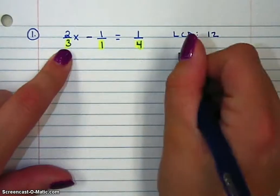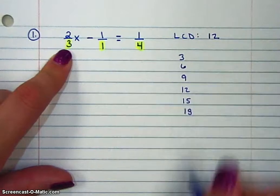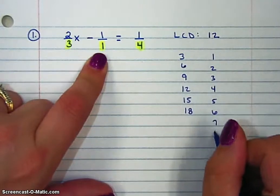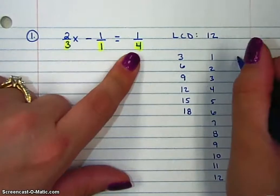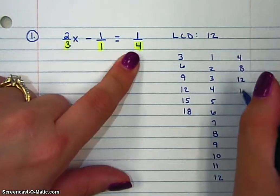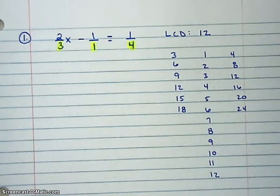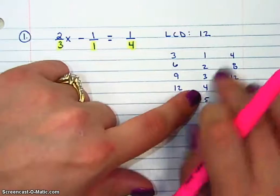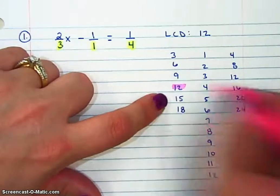If we start counting by 3's: 3, 6, 9, 12, 15, 18, and so on. Same thing with 1's: 1, 2, 3, 4 — we can keep going. And then with 4's: 4, 8, 12, 16, 20, 24, and so on. We're looking for the least common denominator — the smallest number that they all go into. These two have a 3 in common, but this one doesn't have a 3. These two have a 4 in common, but this one doesn't have a 4. So the smallest number that they all have in common is 12.